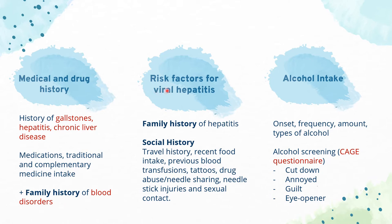Next, we will look at risk factors for viral hepatitis. Elicit any family history of hepatitis. For social history, ask about travel history, recent food intake — as it might be associated with viral hepatitis A — previous blood transfusion for hepatitis C, as well as tattoos, drug abuse, needle sharing, needle stick injuries, and sexual contact for viral hepatitis B in particular. Do not forget to ask about alcohol intake.